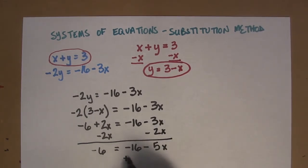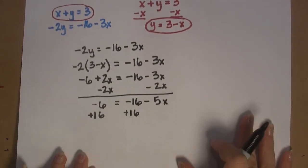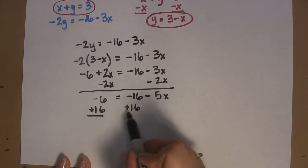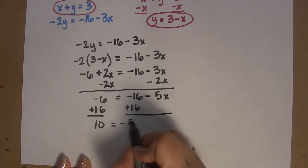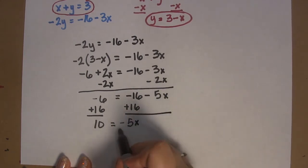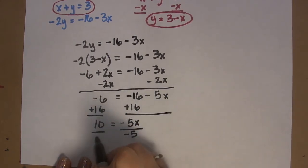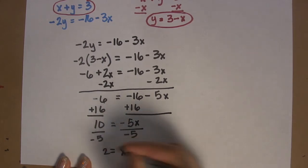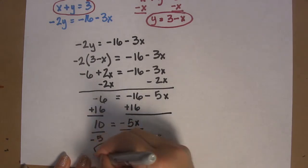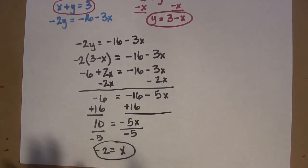Okay. Add 16 to this side. Add 16 to this side. That gives me 10 equals negative 5x. Divide by negative 5. x equals 2. Negative 2. Hello. Pay attention. Watch those negatives. x equals negative 2.